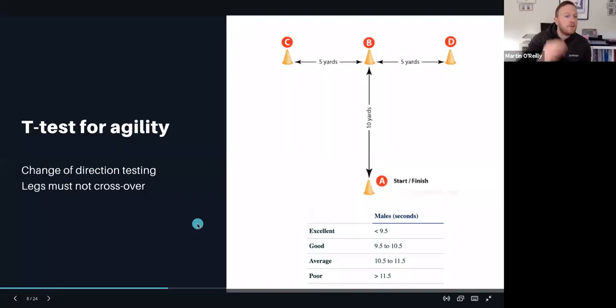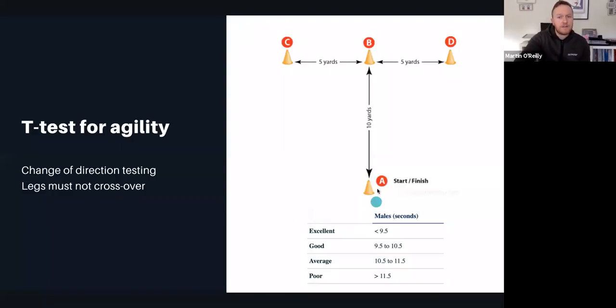The next fitness test we completed was a t-test for agility, whereby an athlete starts at cone A, sprints to cone B, shuffles to cone C, back to D, to B, and back to A. Their legs must not cross over as they do this. An excellent score will be below 9.5 seconds.